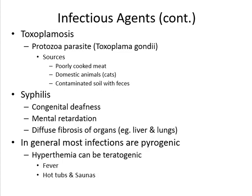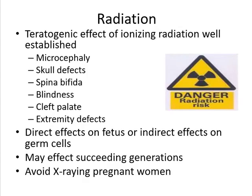Moving to another environmental teratogen: radiation. The effect of ionizing radiation is well established. It leads to microcephaly, skull defects, spina bifida, blindness, cleft palate, and extremity defects. The effect may be direct on the fetus or indirect through the gametes, potentially affecting succeeding generations. Therefore, avoid X-raying pregnant women.